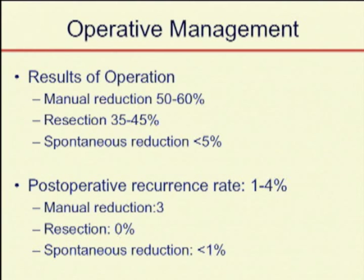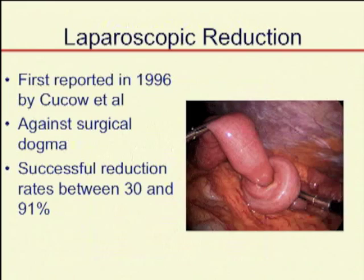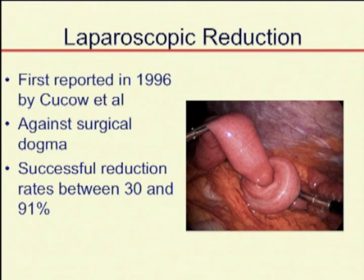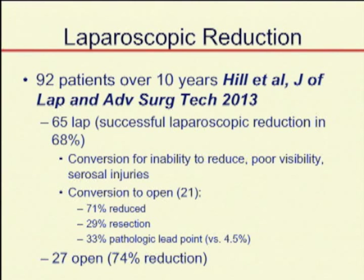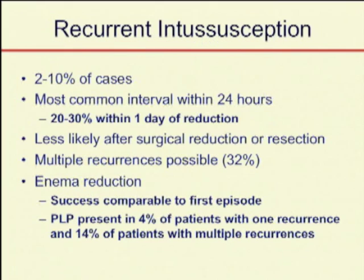This is a picture of the classic open manual reduction. The laparoscopic operation was described in the mid-1990s. It goes against surgical dogma because you're really pulling the ends apart. You can try to milk in some ways, but there's a lot of pulling involved, and we've shown that that is okay. The successful reduction rates are all over the place in the literature, but this simply shows that the laparoscopic approach is successful. It's safe, effective, and has the benefits you would expect from laparoscopy as opposed to a big open incision.